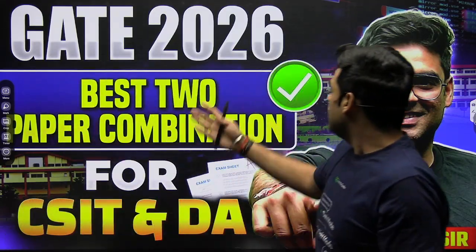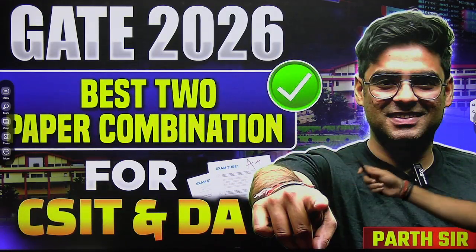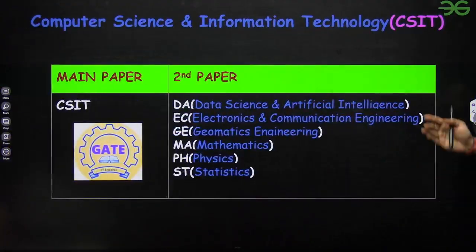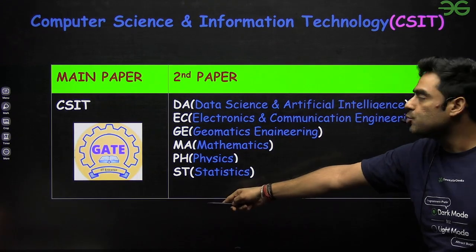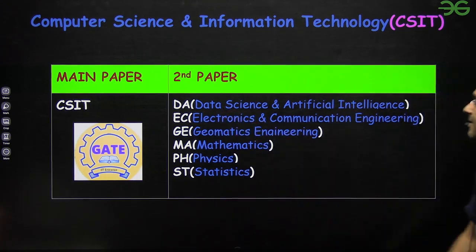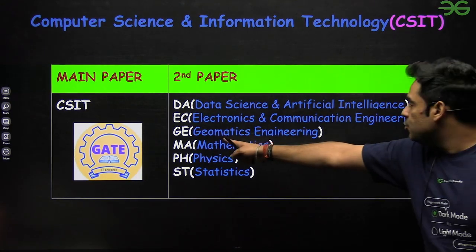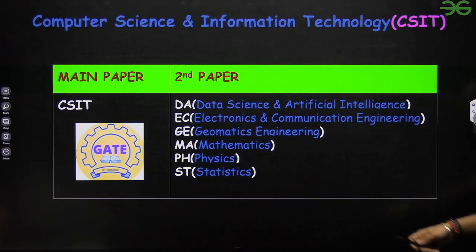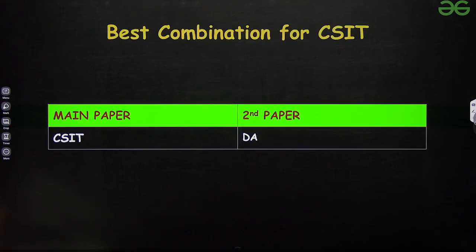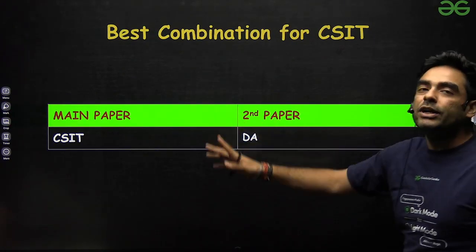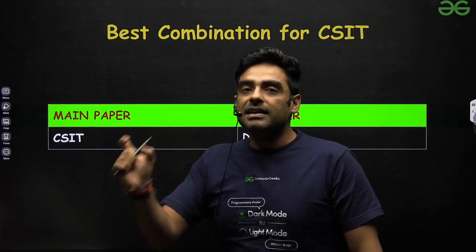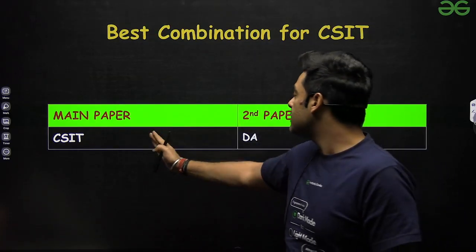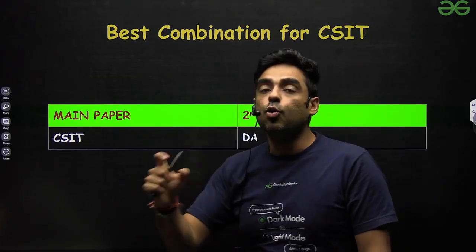For CSIT, the second paper options you can fill are: Data Science and Artificial Intelligence, Electronics and Communication, Geomatics Engineering, Mathematics, Physics, and Statistics. The best combination for CSIT according to me is DA — Data Science and Artificial Intelligence — because the syllabus overlaps a lot.